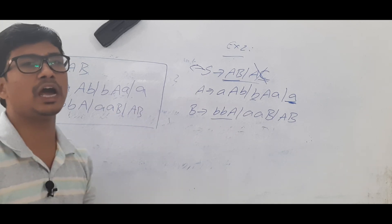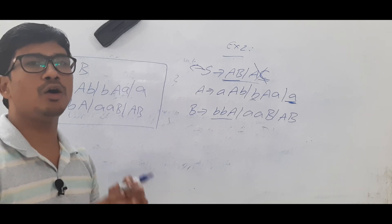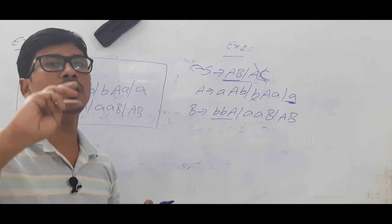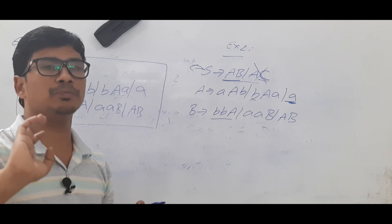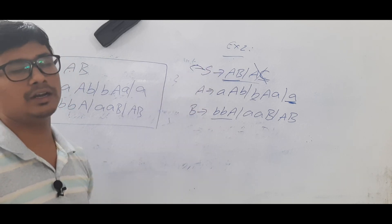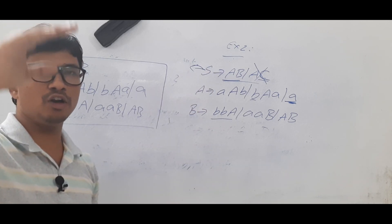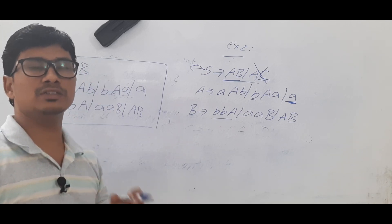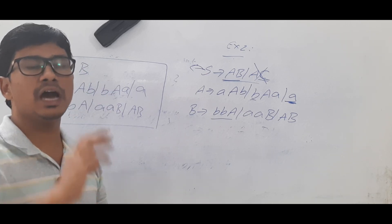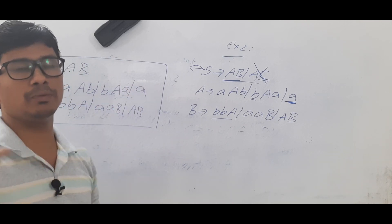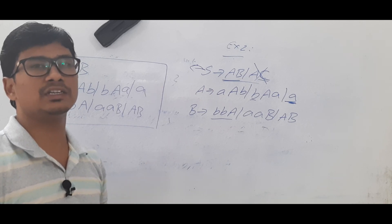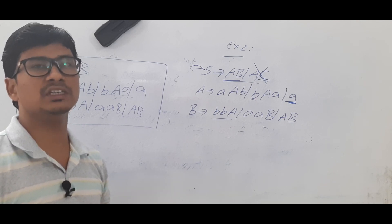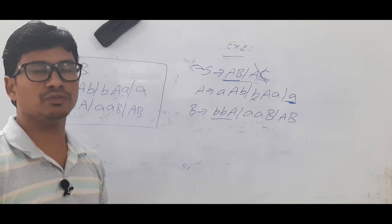We took a lengthy grammar, simplified it, and obtained the simplified grammar. With these two examples I hope you have understood how to eliminate useless productions and useless symbols. We have already discussed how to eliminate epsilon productions, unit productions, and now useless symbols. If you follow the order — first epsilon productions, then unit productions, then useless symbols — you will get the simplified grammar. In the next video I will do all steps together on one example. Thank you for watching; feel free to ask doubts in the comments and I will respond within 24 hours.